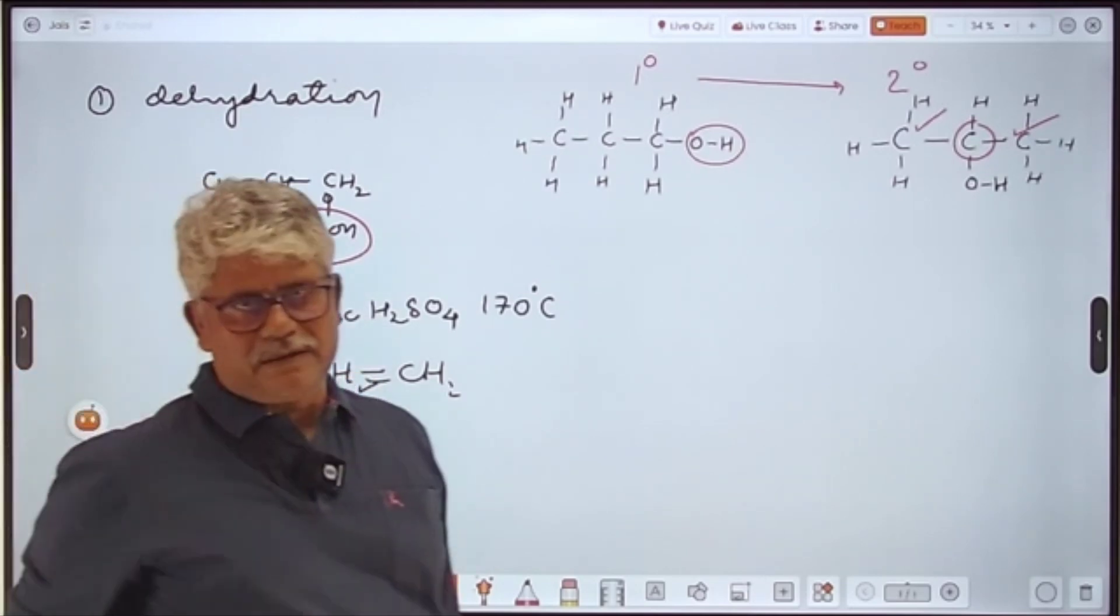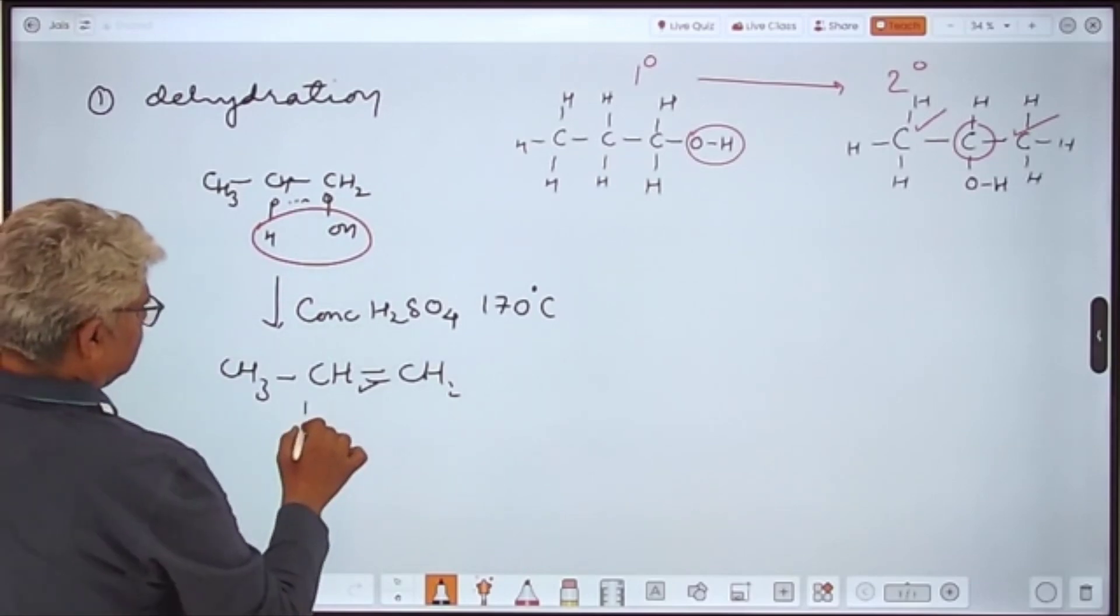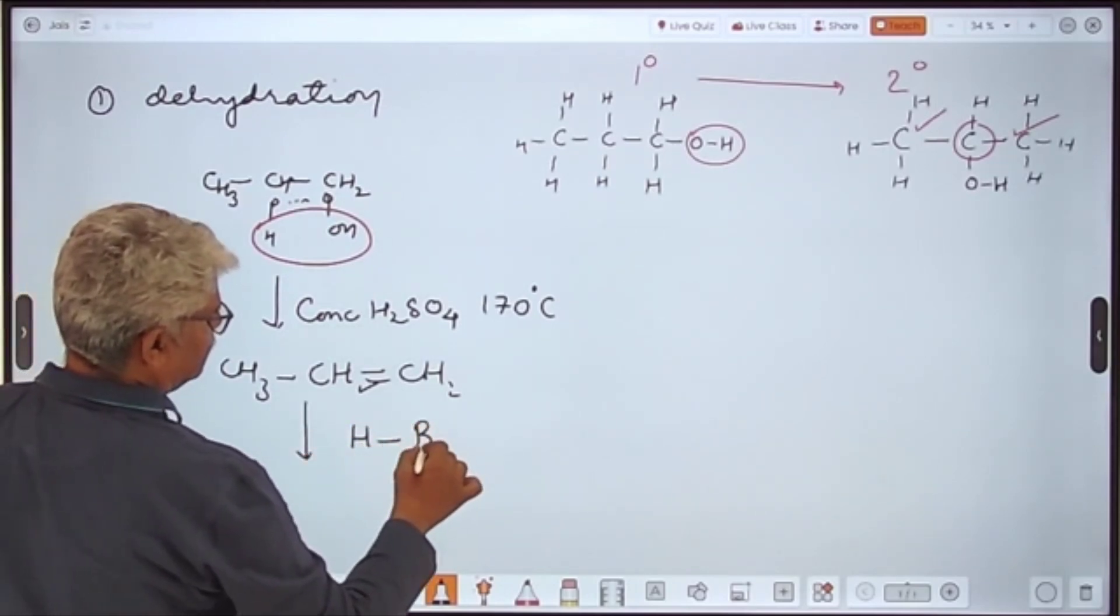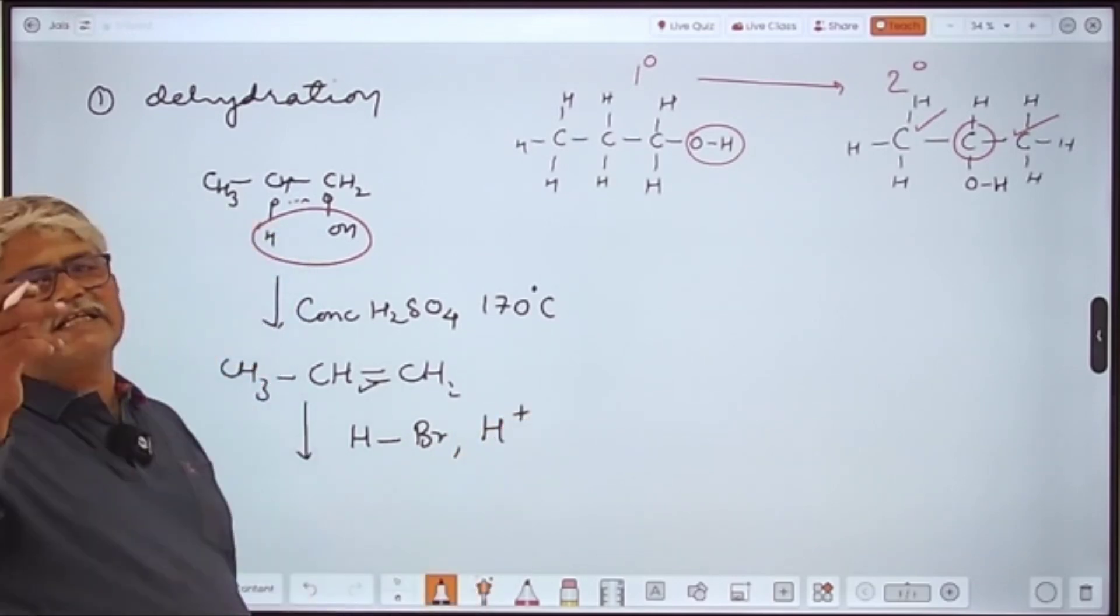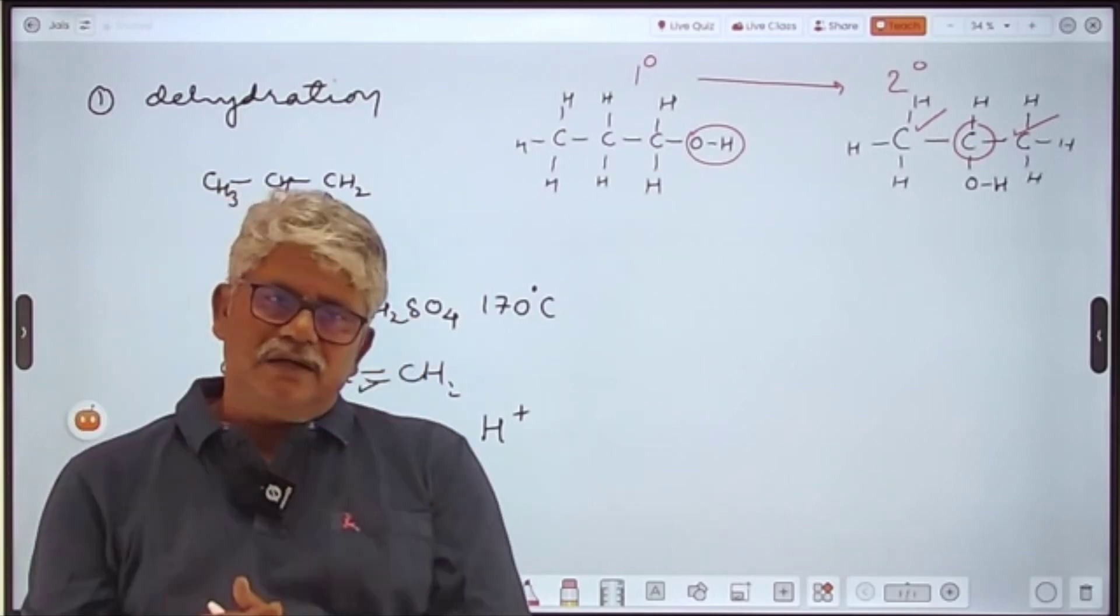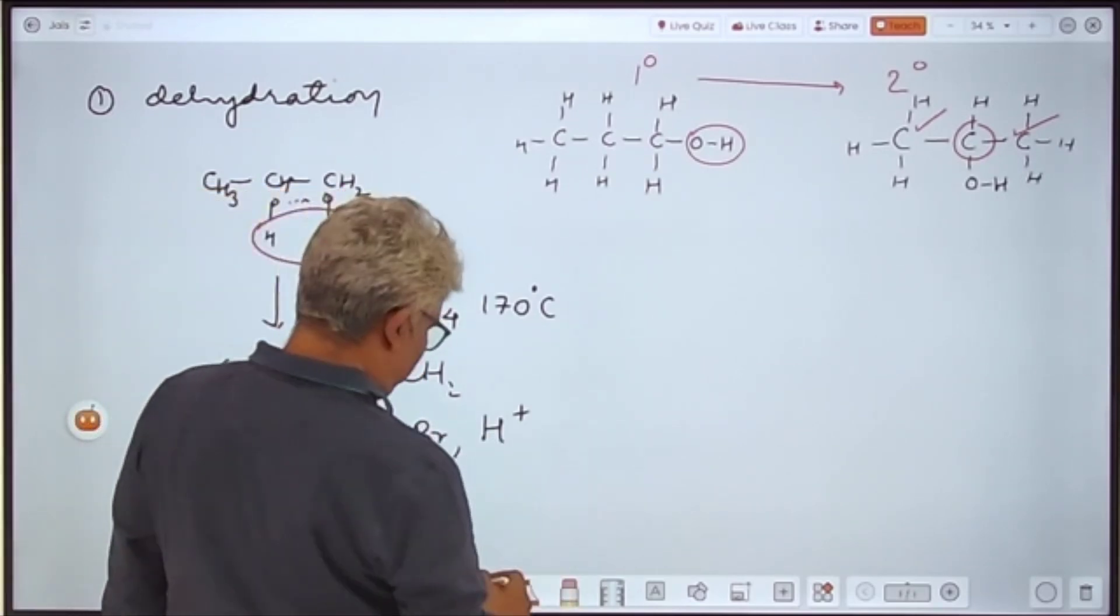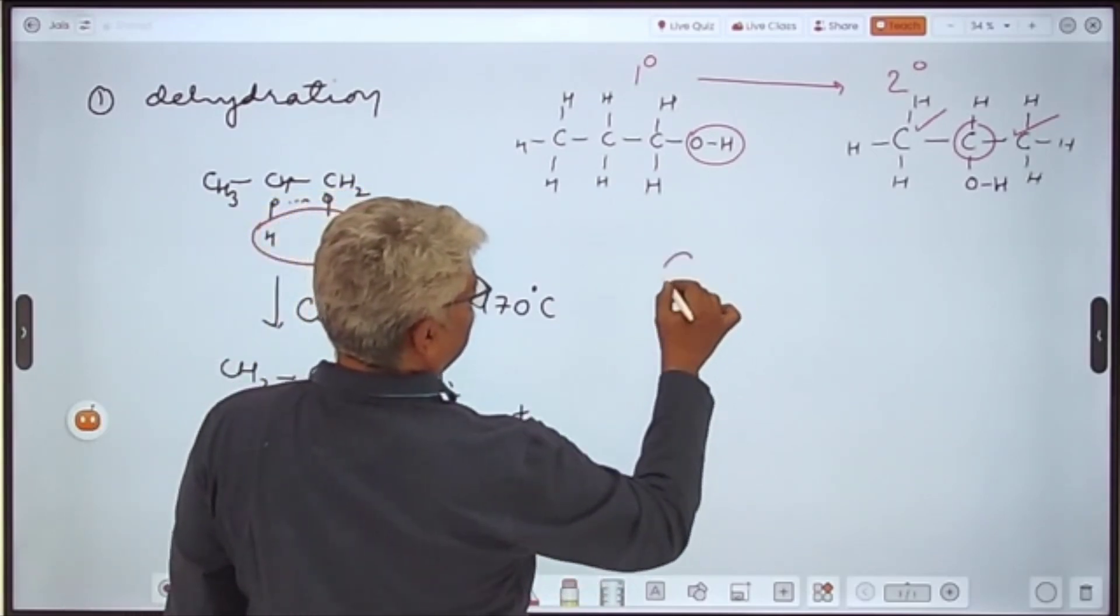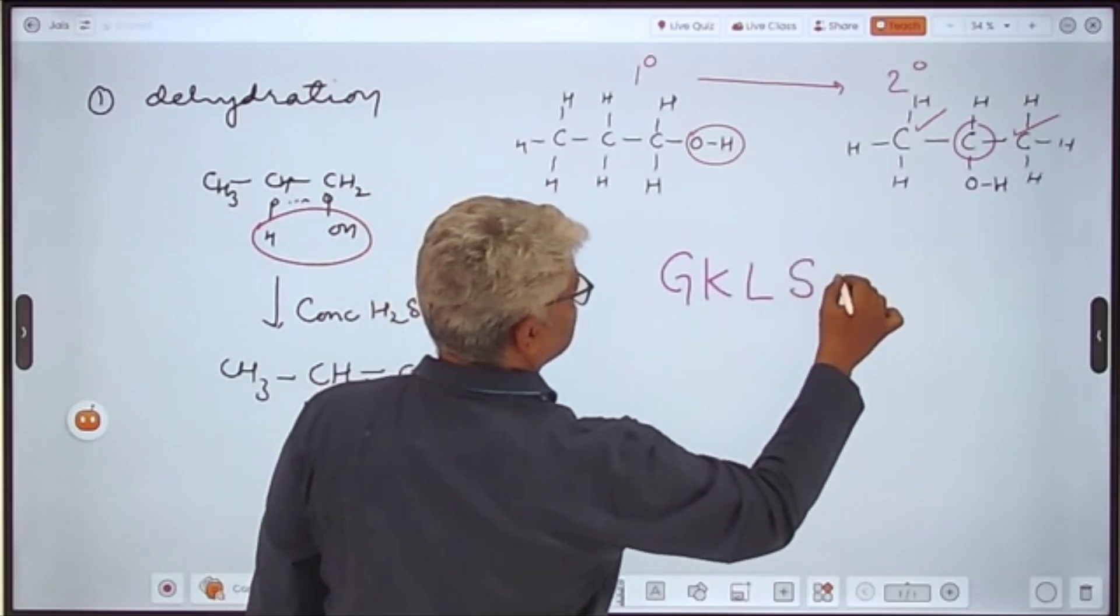Now step number two after this is you add hydrogen bromide in acidic medium in a very interesting mnemonic. A mnemonic is a method, your own method, through which you learn something. So in this case the mnemonic is garib ki lugai sabki bhajai.